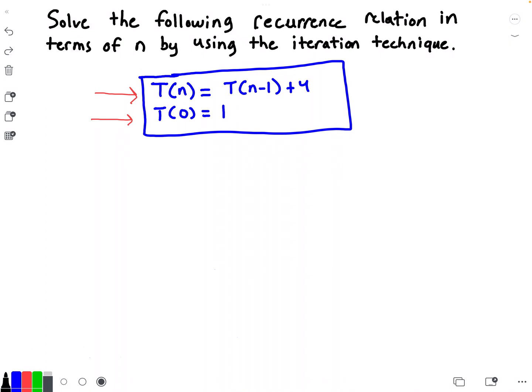To get started, we're going to create two columns. The first column I will call K, and it will contain the number of iterations. The second column I will call T(n), and it will contain the recurrence relation at each iteration — showing what that recurrence relation looks like at each step.